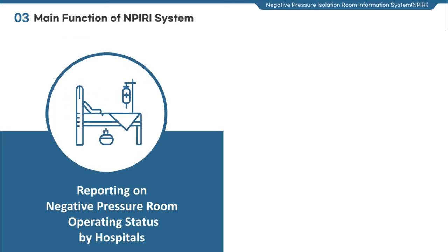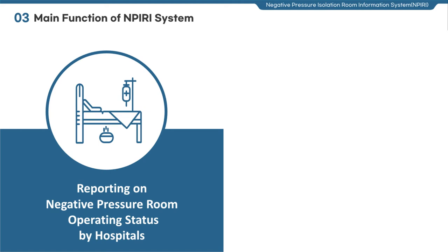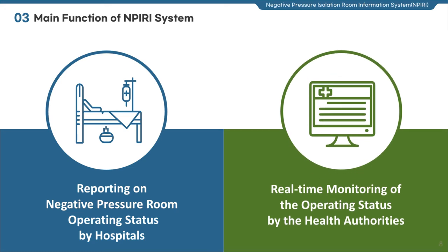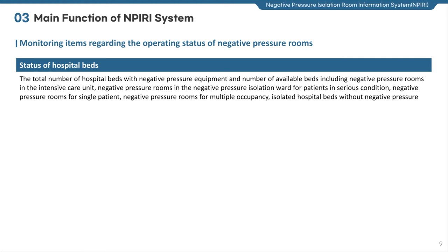The main function of the Negative Pressure Isolation Room Information System is to report on the negative pressure room operating status by hospital and monitor the operating status by health authorities in real time. There are largely four monitoring items regarding the operating status of negative pressure rooms. First, the status of hospital beds — the number of beds with negative pressure equipment and their availability. Types include negative pressure rooms in the ICU, single or multiple occupancy ICU beds, and isolated hospital beds without negative pressure.